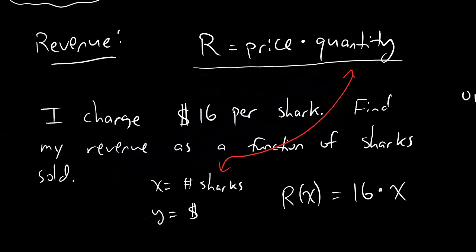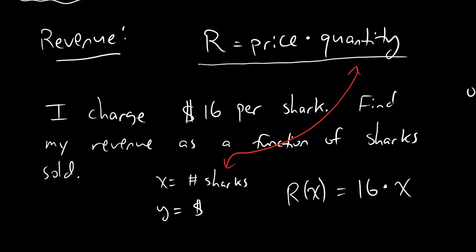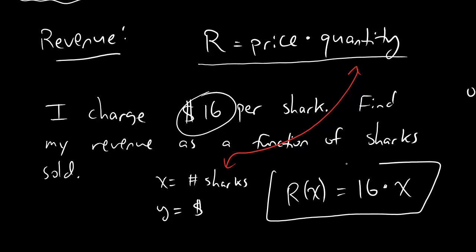In this particular problem, we know that we're plugging in a number for price because we're given a price number. And so that's why quantity just stays x. It'll be the same thing the other way. If you're given a number for quantity, and you're supposed to leave price the same, you should be able to tell because it'll say something like, I purchased 10 sharks. All right, so r of x equals 16 times x. That just comes straight out of the fact that revenue equals price times quantity. 16 was our price, x was our quantity, so we got a nice handy-dandy function, and that's the answer for this question.